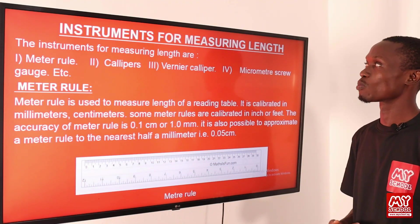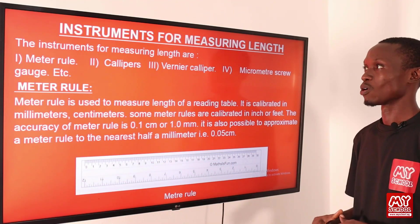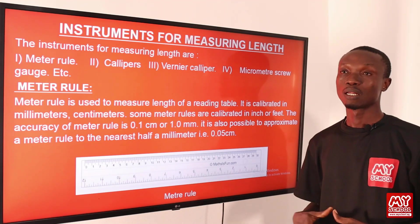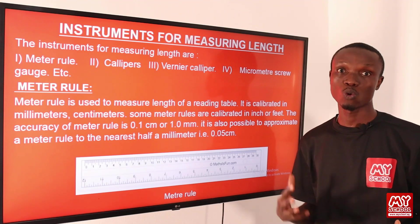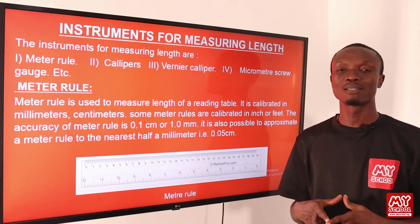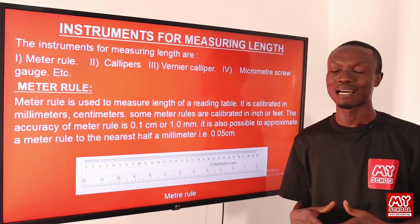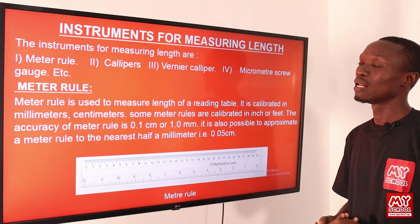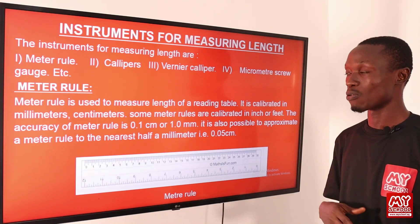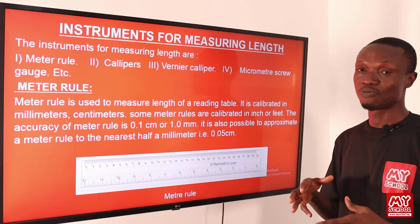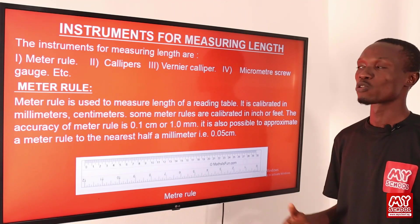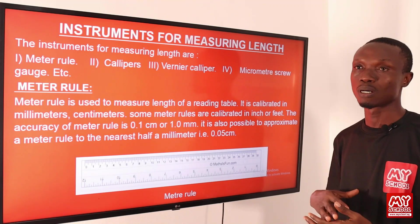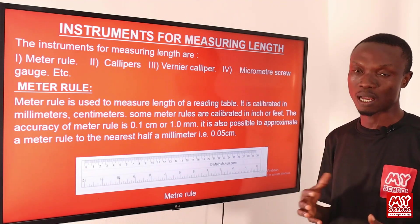Here we are going to be talking about instruments for measuring length. Before we discuss the instruments for measuring length, let's first get to know the meaning of length. Length is the extent of space or distance extended. The instruments for measuring length are as follows: we have the meter rule, we have the caliper, we have the vernier caliper, and the micrometer screw gauge. We are going to be discussing each of these measuring tools one after the other.